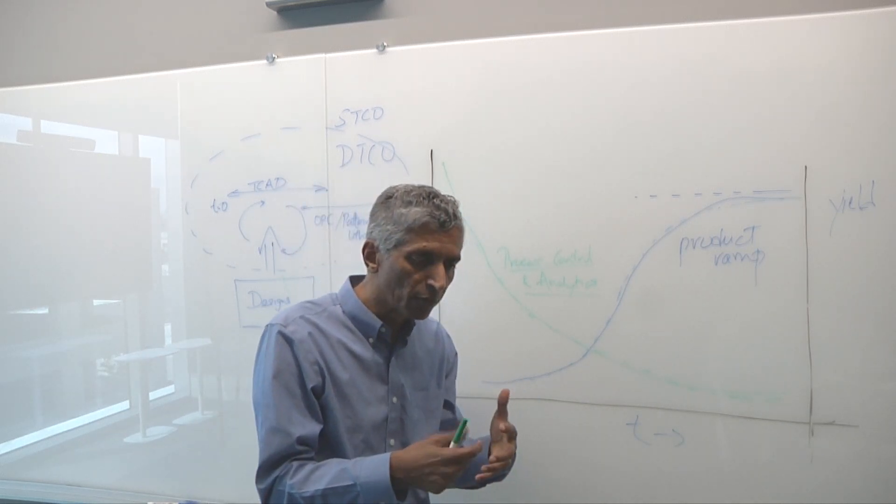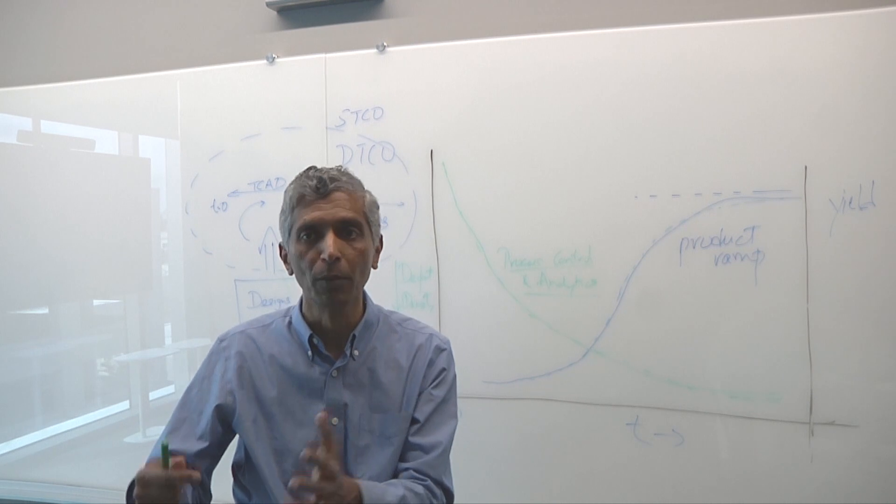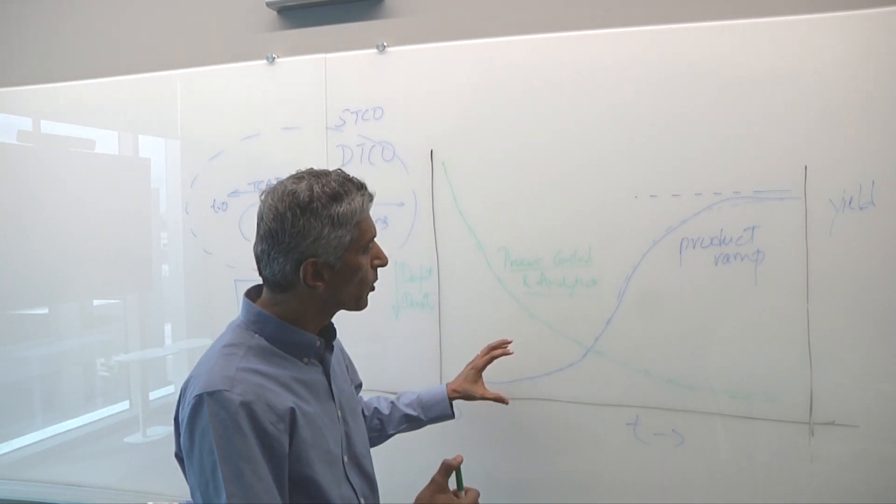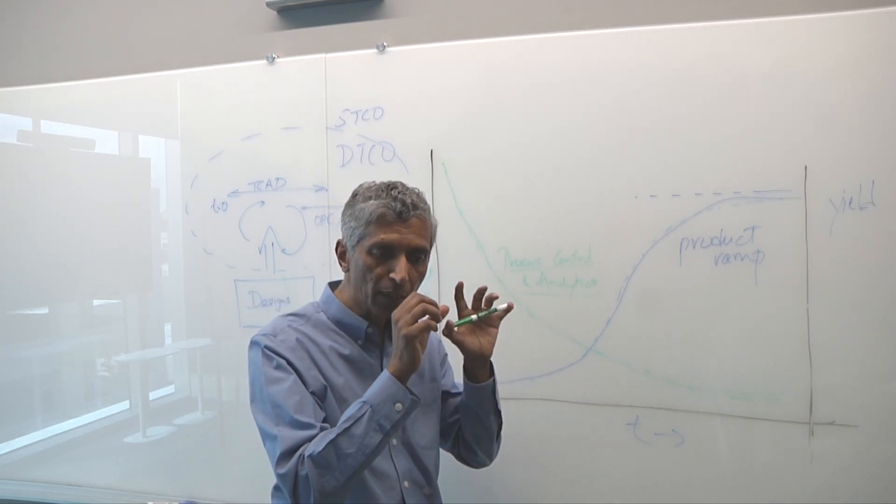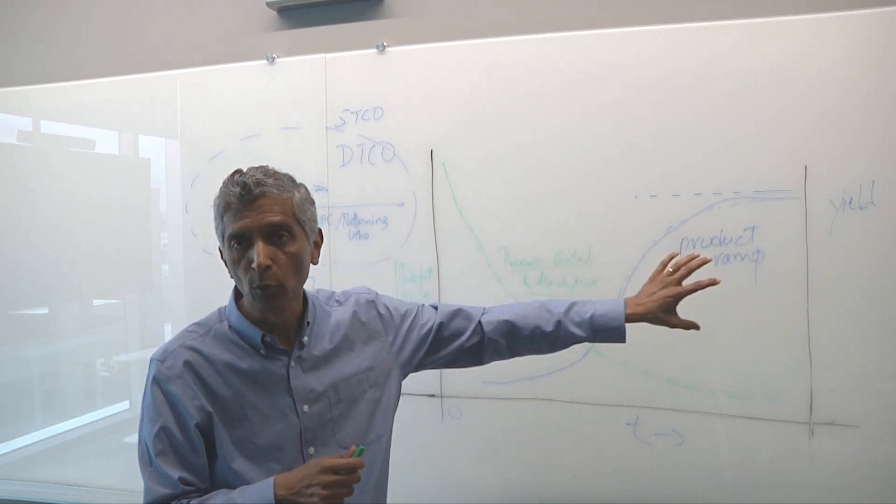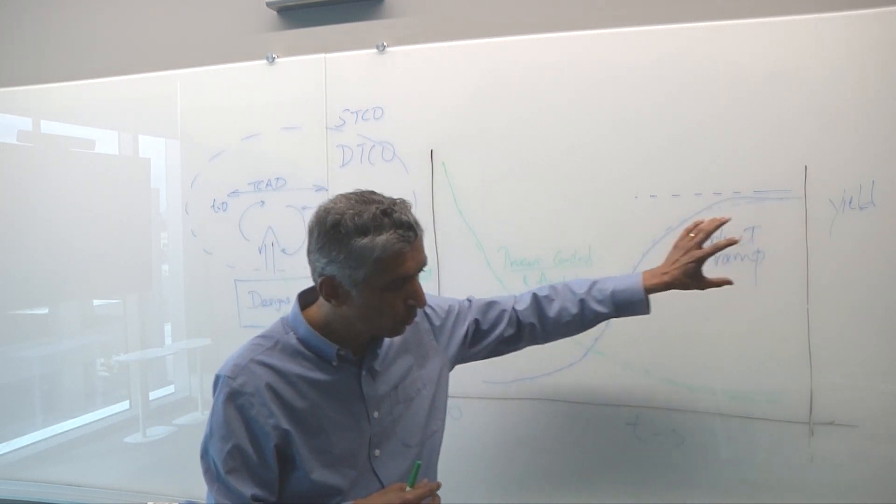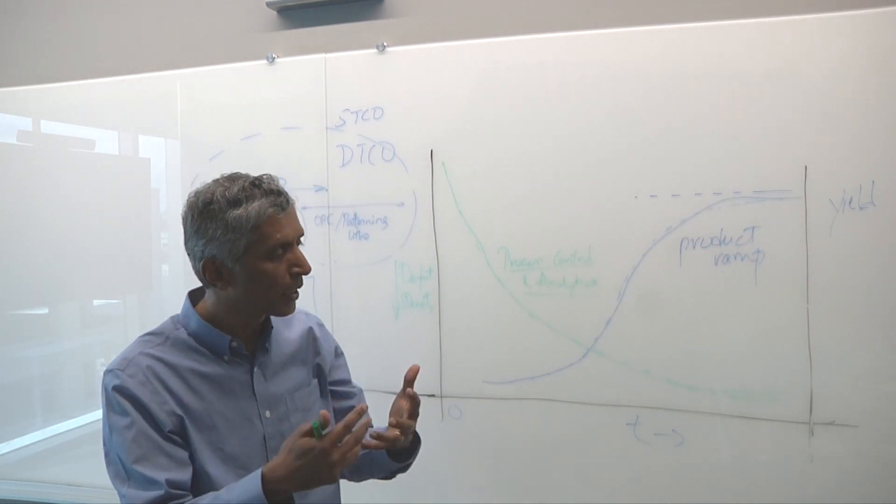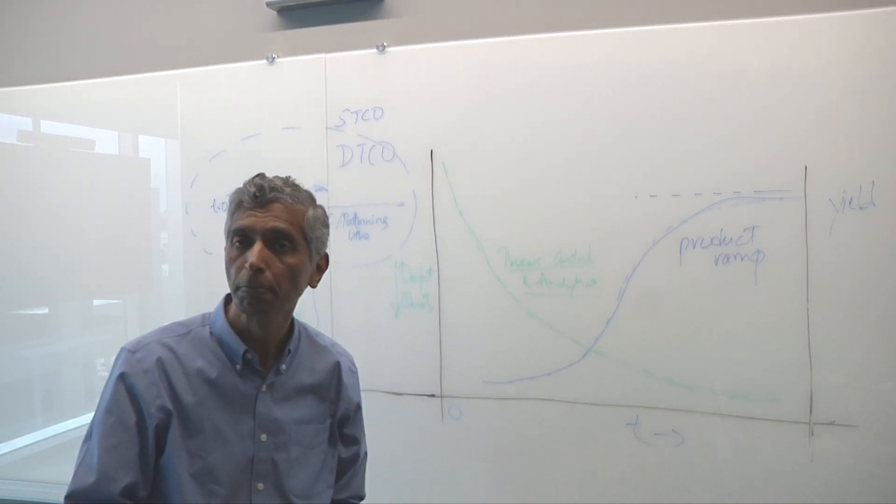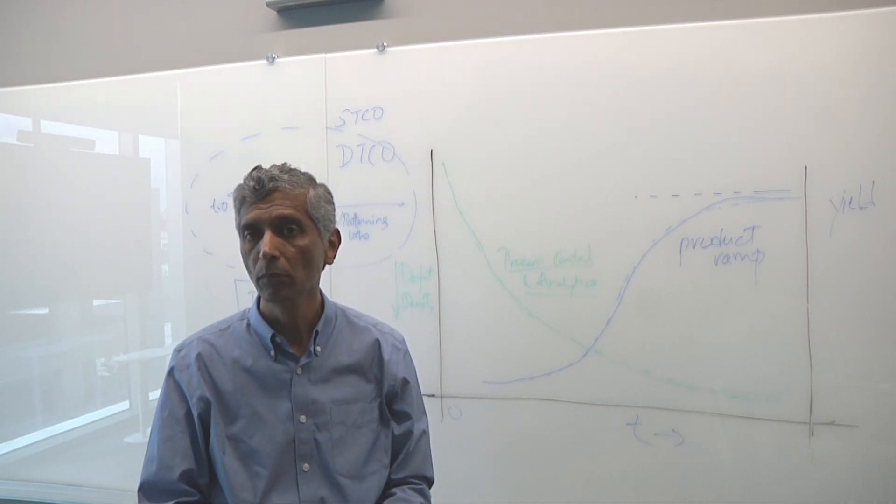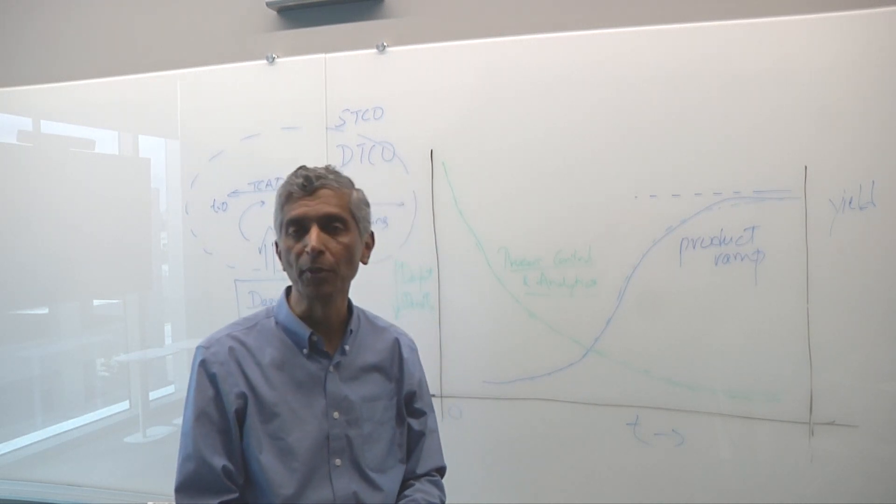That data continuum is what will help you move from reactive process control to predictive process control. The old days of waiting for a problem to occur and then debugging it is not what you want in a gigafab with so much at stake. So predictive process control is where you're changing the paradigm to proactively listening to signals that tell you what's going on with your equipment, what's going on with your parametric yield, what's going on with your functional yield, and using that as a way of proactively getting in front of a problem. Really what you're doing is shifting everything left in now the manufacturing side, right?